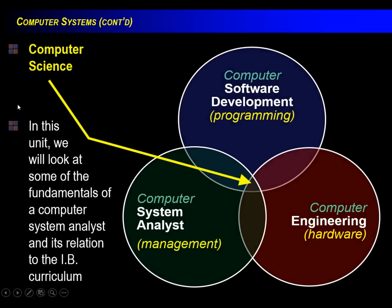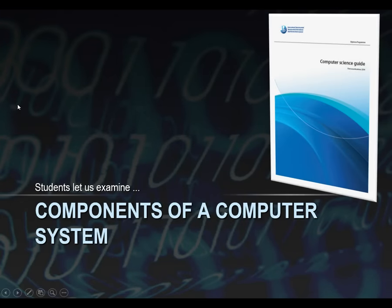Maybe look at it this way: computer science exists in overlapping circles. Yes, software development and programming is a big part of it. Some hardware engineering could be part of computer science — it's not necessarily the focus, but a lot of what we do has an engineering aspect to it. There's also a management aspect — people in computer science become bosses in computer science, so training and managerial skills is also part of what computer science is. Okay, that's my intro — let's dive into the curriculum now.